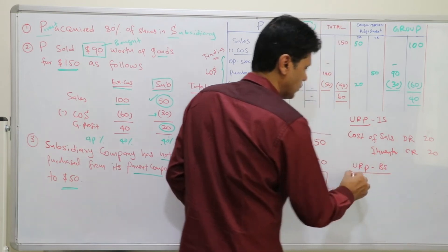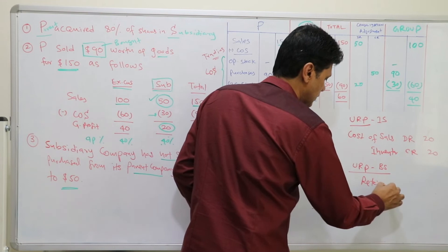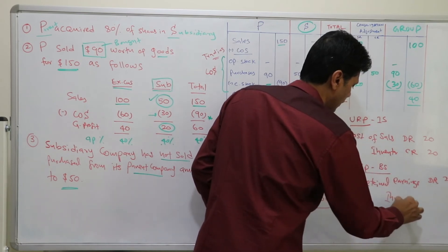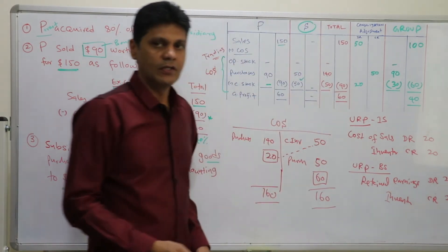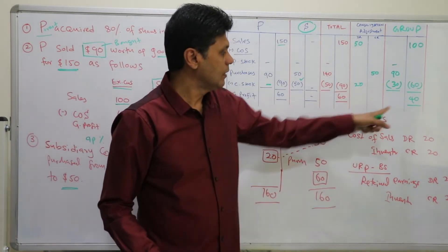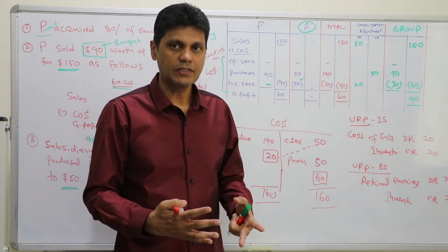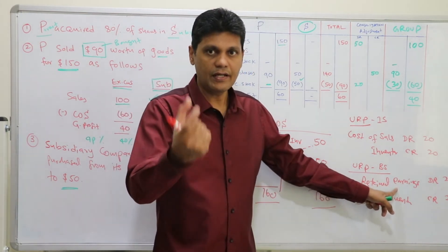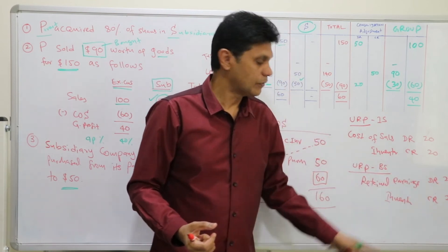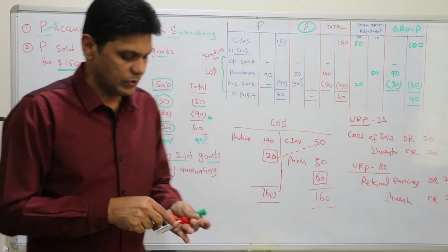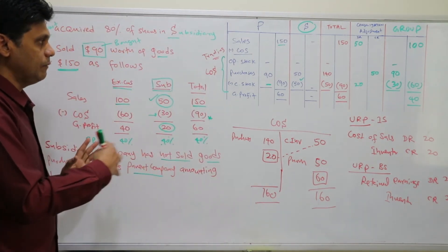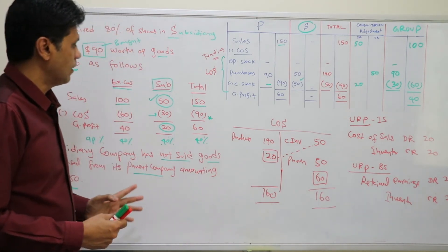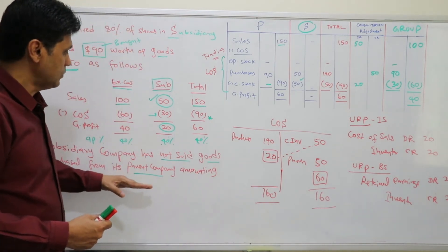For the consolidated statement of financial position, the double entry to remove unrealized profit is: debit retained earnings $20, credit inventory $20. The retained earnings carries the unrealized profit since profit is transferred to equity, so you need to debit retained earnings and credit inventory to eliminate it. This is how you record the elimination of intercompany transactions as well as unrealized profit.